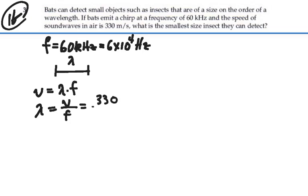330 meters per second for sound divided by 6 times 10 to the 4 hertz gives us 5.5 times 10 to the minus 3 meters, or you could say 5.5 millimeters.